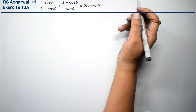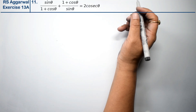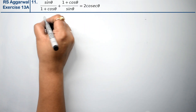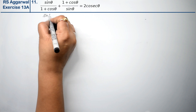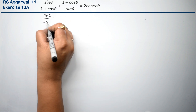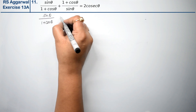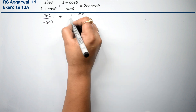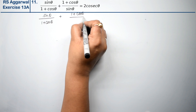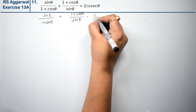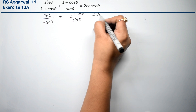Let's do question number 11 of exercise 13a, that is trigonometric identities. Question number 11 is: sin theta upon 1 plus cos theta, plus 1 plus cos theta upon sin theta. And we can prove this equals 2 cosec theta.